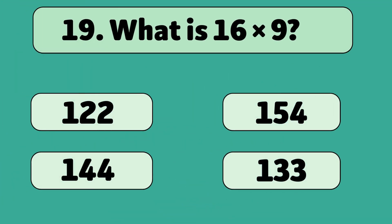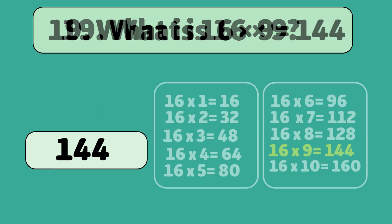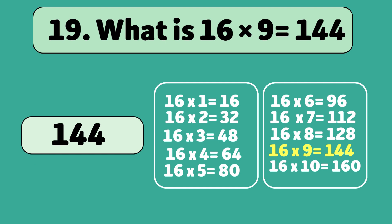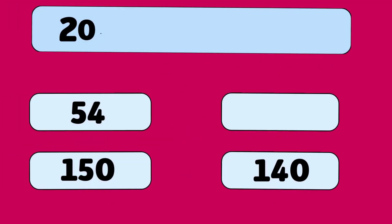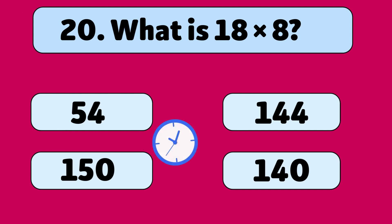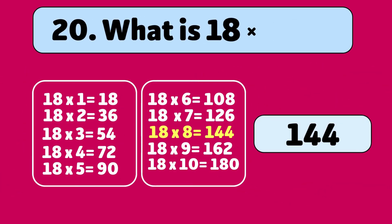16 times 9 is equal to... 144. 16 times 9 is 144. 18 times 8 is equal to... 144. 18 times 8 is equal to 144.